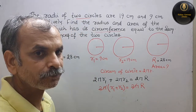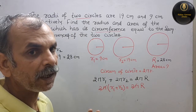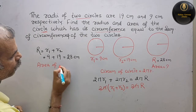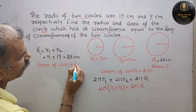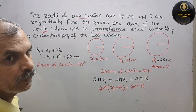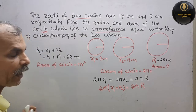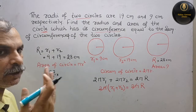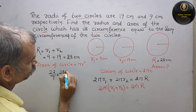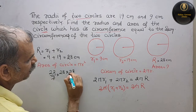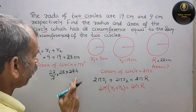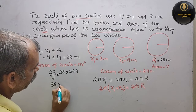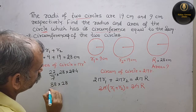Ab aapko nikaalna hai area. Toh area of a circle kya hota hai — π r square. That we will write: area of circle is equal to π r square. Ab aapko kya karna hai: iski value daalo. π is 22/7, r square means 28 into 28. Cut karo 7 ke saath — yeh ho gaya 4 times, toh 4 into 22 is 88. Toh 88 into 28 — in dono ko multiply karo, you will get your answer.